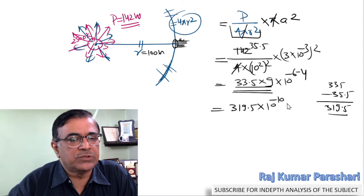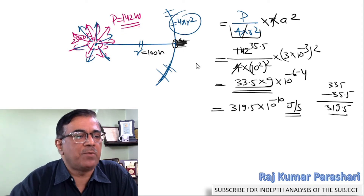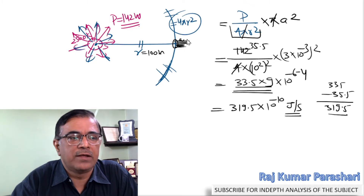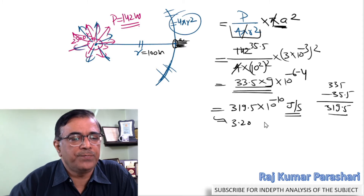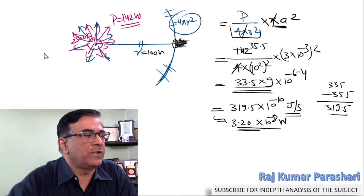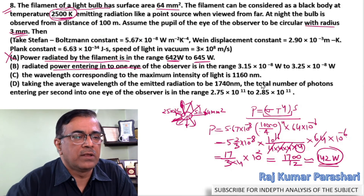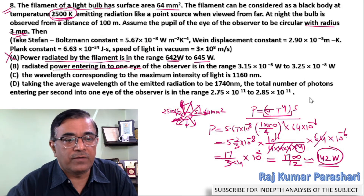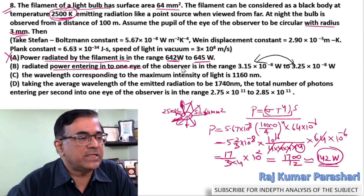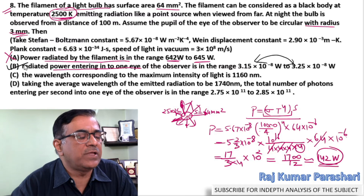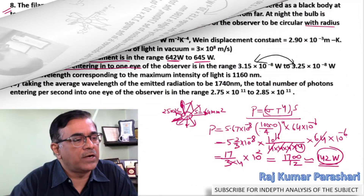This is the energy entering our eye through area π a² per second, which equals about 3.20 × 10⁻⁸ watts. The calculated value lies within the expected range, so we can consider this to be the correct option for Part B.